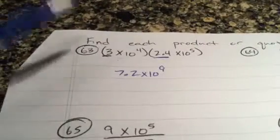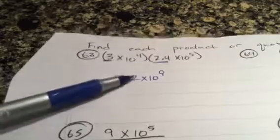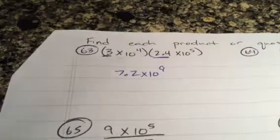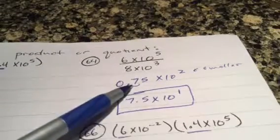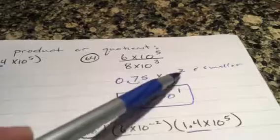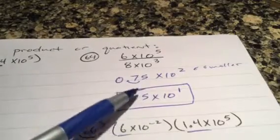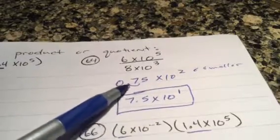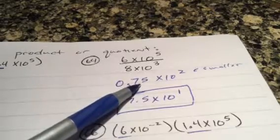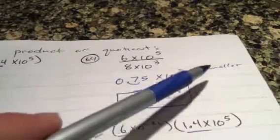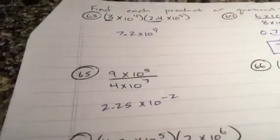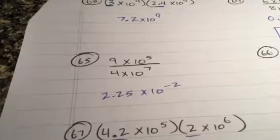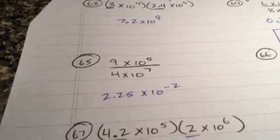On the last page, find the product. Do three times 2.4 which is 7.2, then add the exponents to get times 10 to the ninth. Here, do 6 divided by 8 which is 0.75; the top has two more so 5 minus 3 is 2. Notice that's not proper scientific notation, so move it over — if you make it 7.5 you've made it bigger, so make the exponent smaller by one: 7.5 times 10 to the first.